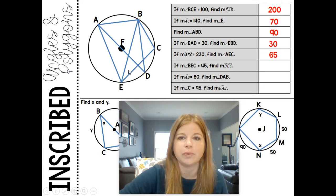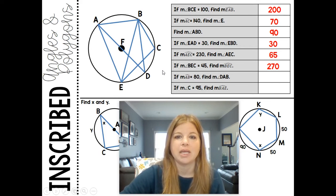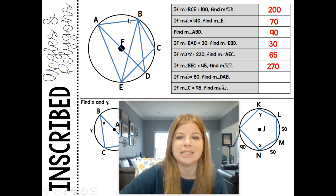If the measure of angle BEC is 45, find the measure of arc BEC. If this is 45, then arc BEC would be 90. Arc BEC would be 360 minus that 90, so it's 270.